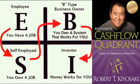Rich Dad's Cash Flow Quadrant is about the four different people or cast of characters that make up the world of money, business, and investing. The Cash Flow Quadrant is about the differences between the E Quadrant, which stands for employee; the S Quadrant, which stands for self-employed or small business owner; the B Quadrant, which stands for business owner; and the I Quadrant, which stands for investor.